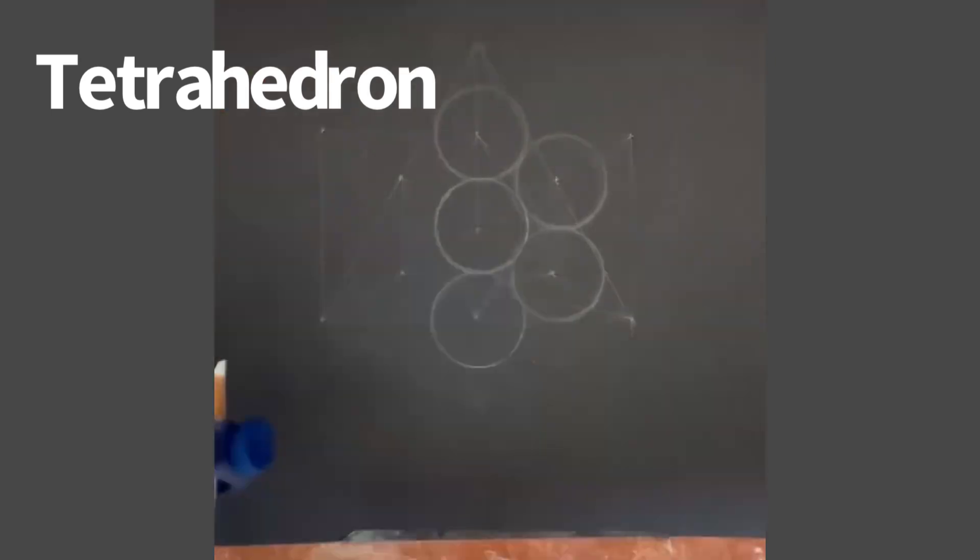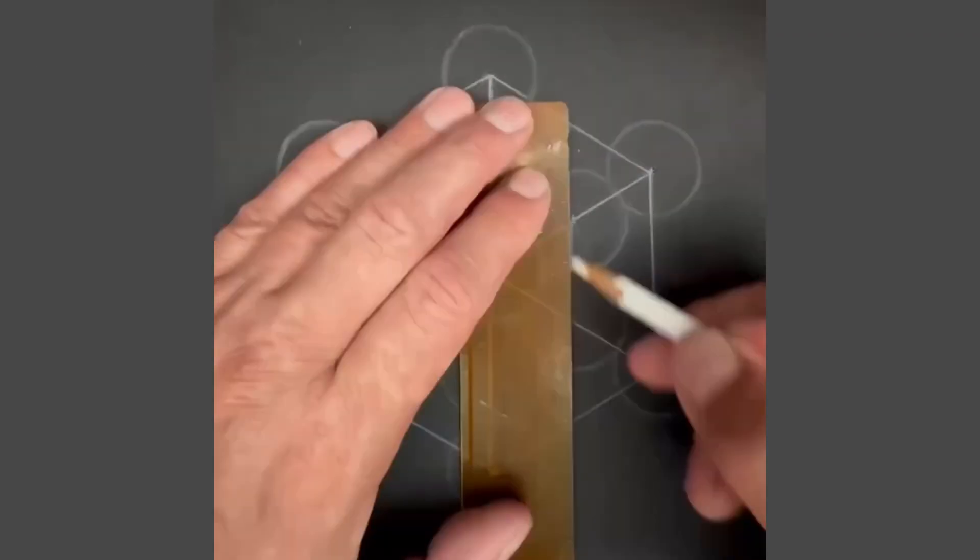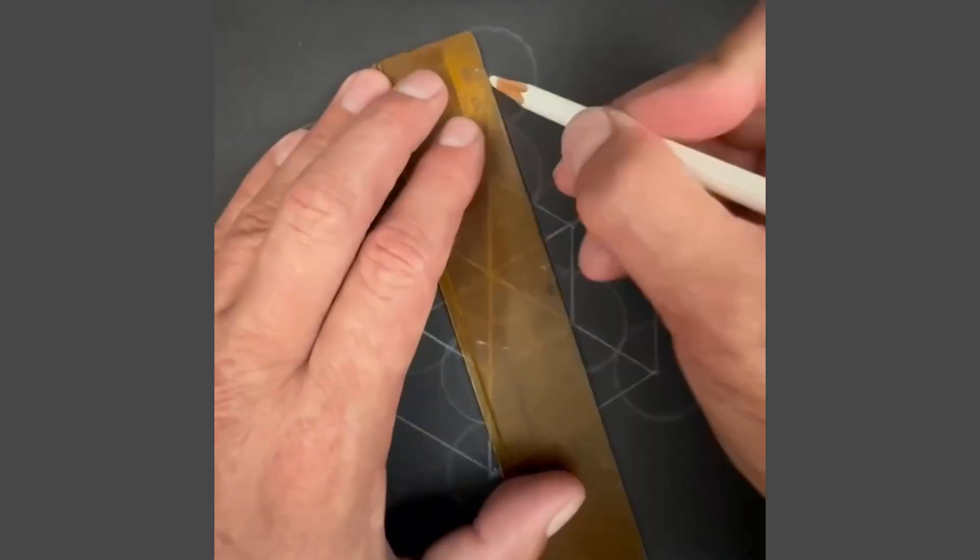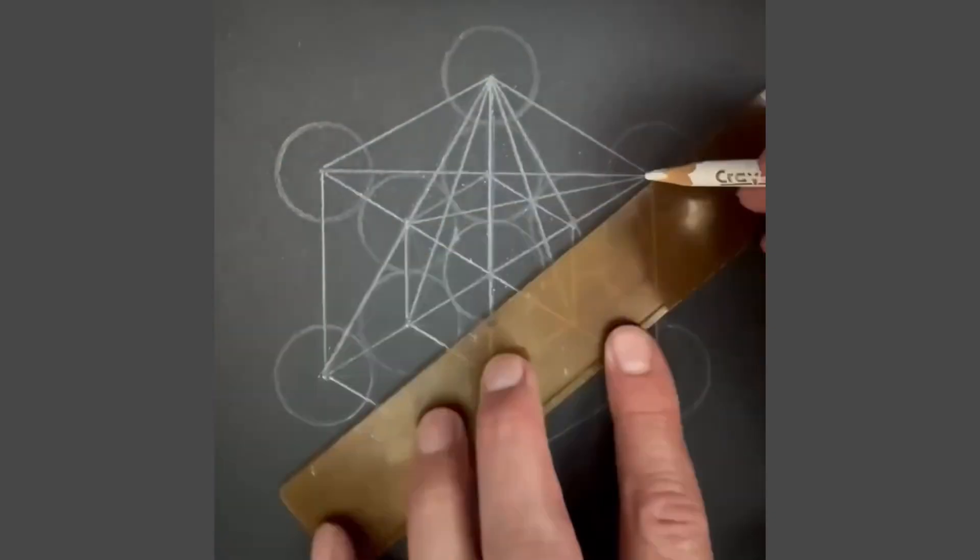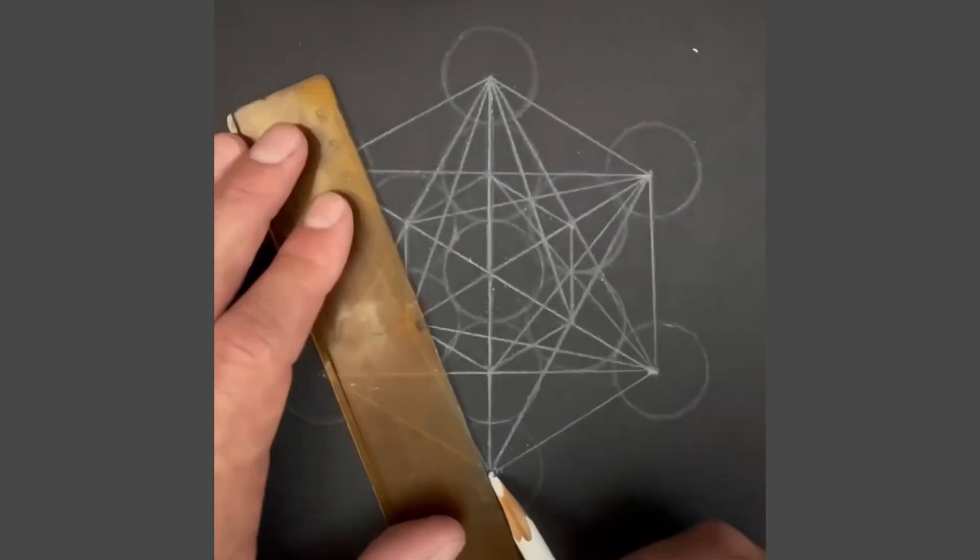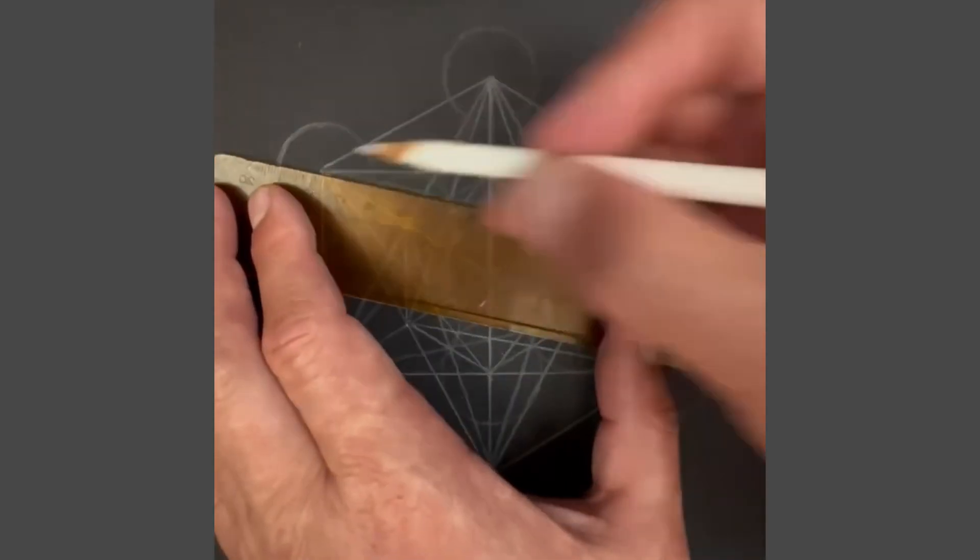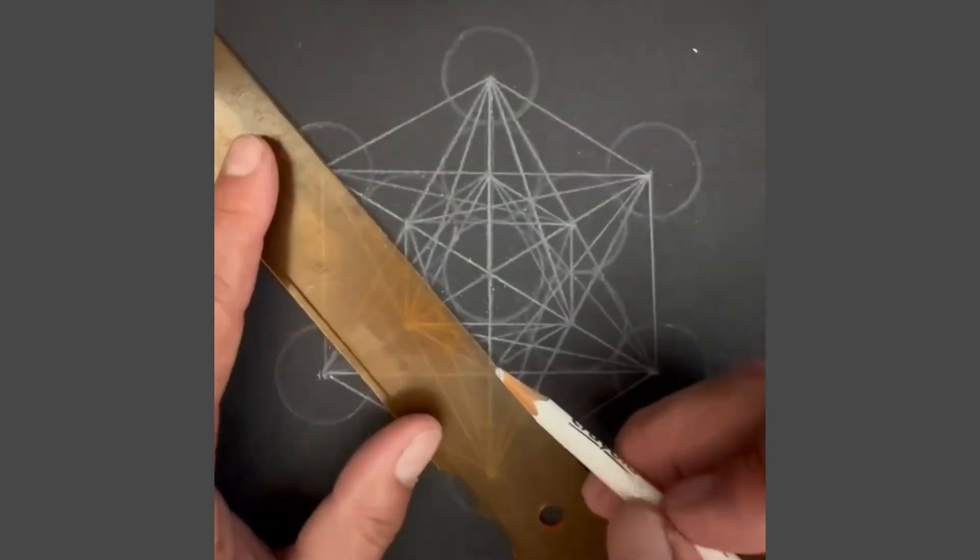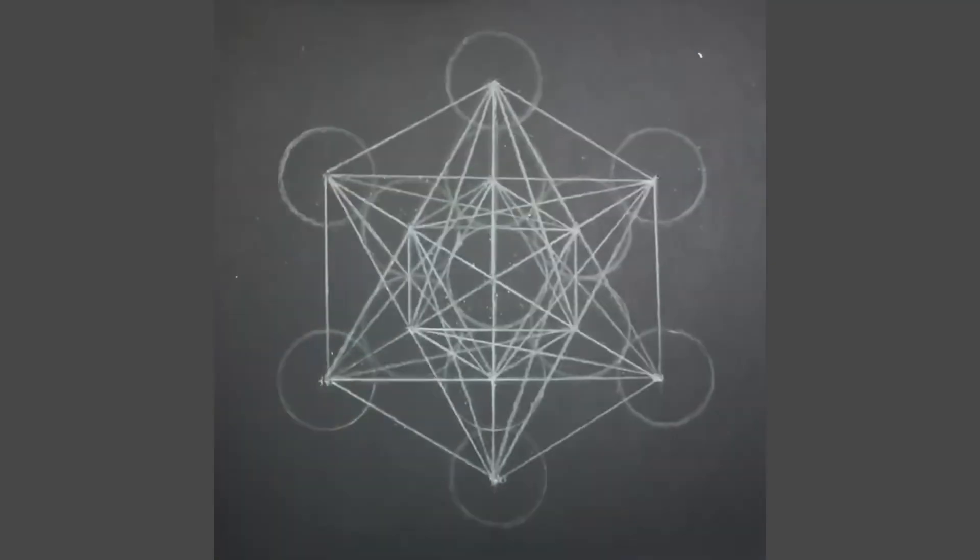To draw the tetrahedron from the Metatron's cube, start with the 13 circles. Connect the center of each circle together to create a Metatron's cube. You will need to join each individual circle to the center of each other individual circle. Once you've done this, you will have a Metatron's cube which will look exactly like this.